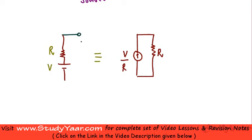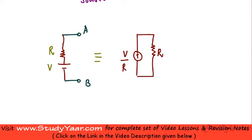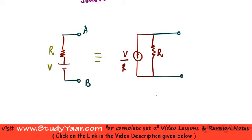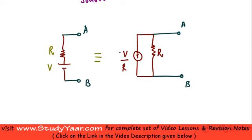If you have an open circuit — let's say this is A and this is B — what is the voltage across this open circuit? Since this is an open circuit, there is no current flowing. Therefore the voltage across AB is V volts. Now if you have an open circuit on the other side, the voltage across AB is the voltage across this resistance. We already said the current of the current source is V upon R. Therefore the voltage across this resistance is V upon R into R, which equals V. So over here also the voltage across the open circuit is V volts.